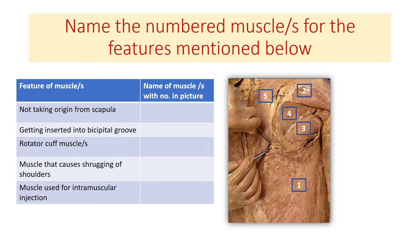Now try another exercise for the same muscles you have identified. Name the numbered muscle or muscles for the features mentioned: which muscle is not taking origin from the scapula; which one is getting inserted into the bicipital groove; which one forms part of the rotator cuff; the muscle that causes shrugging of the shoulders; and the muscle used for intramuscular injections. Try to answer these using the features mentioned.